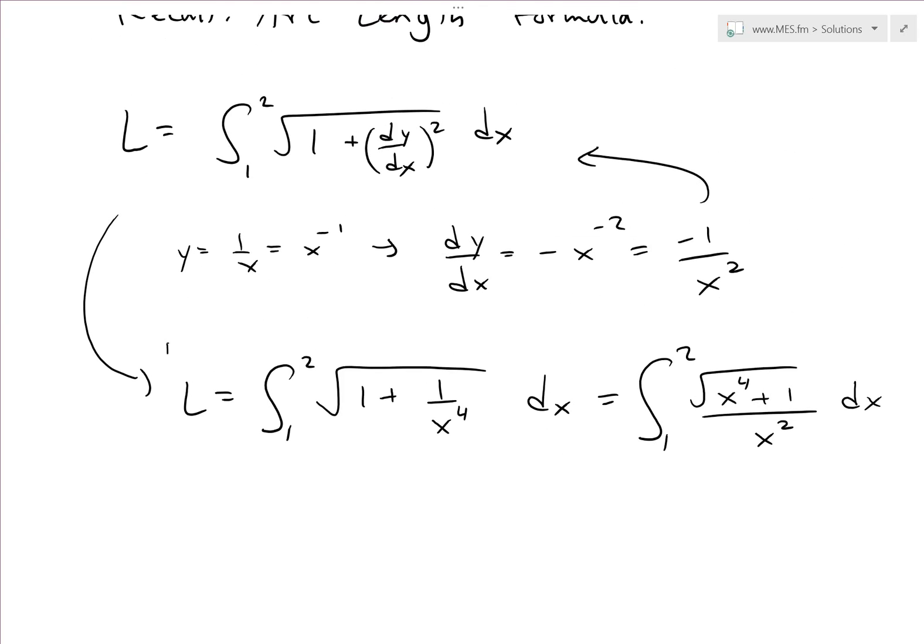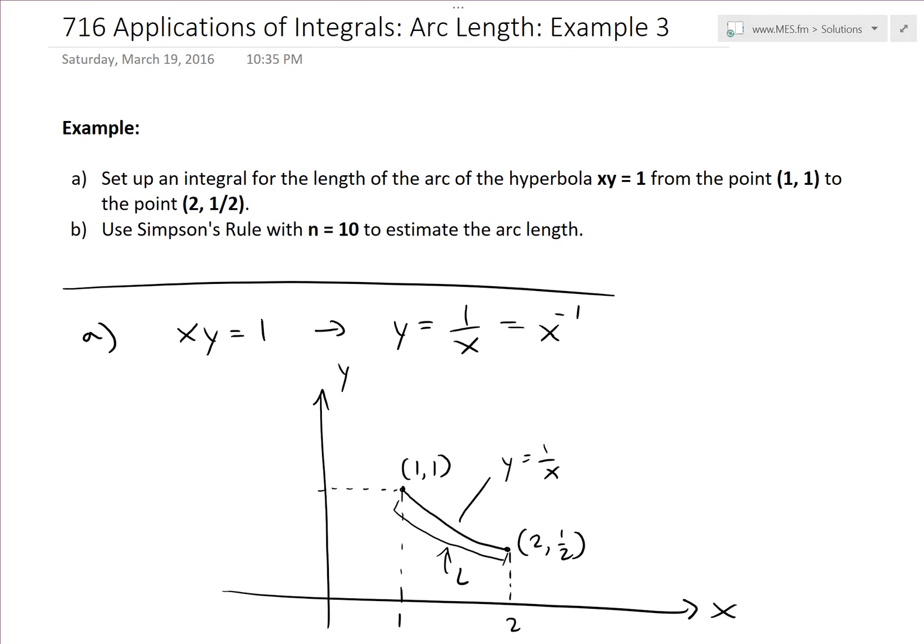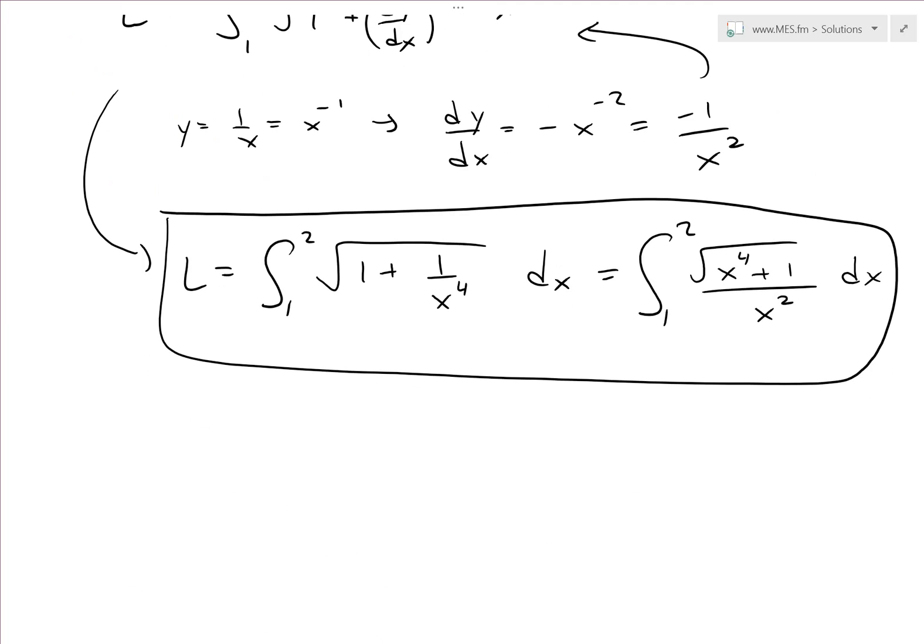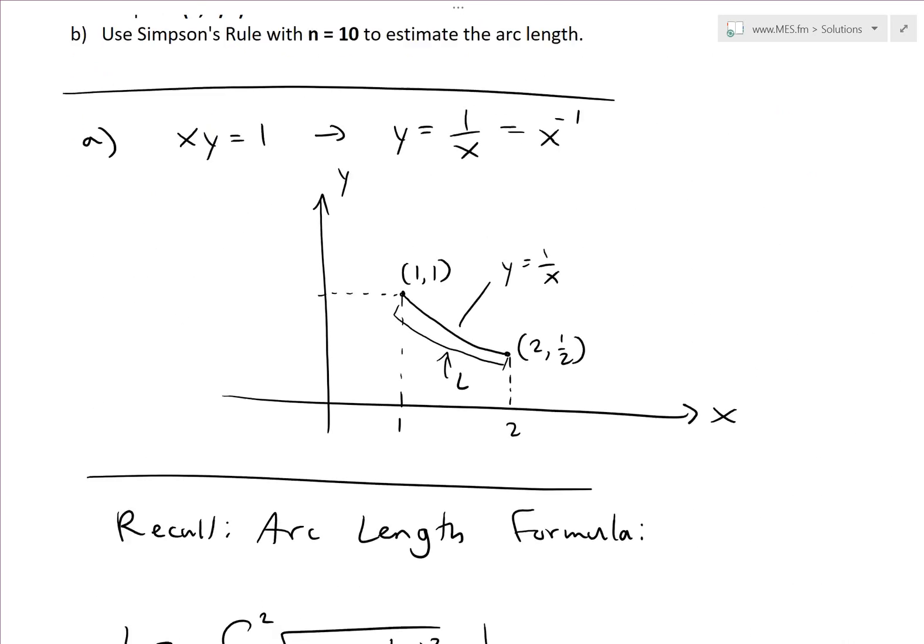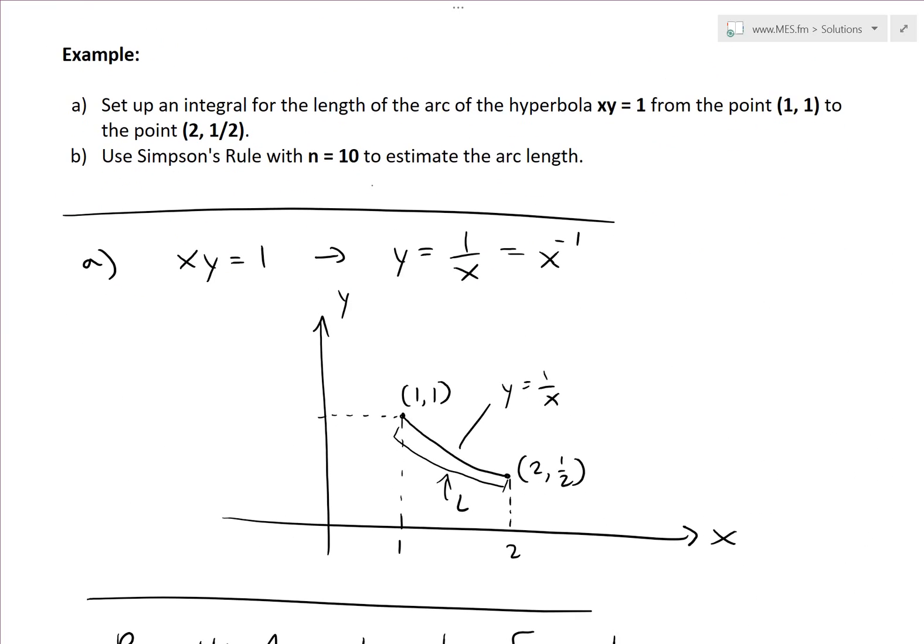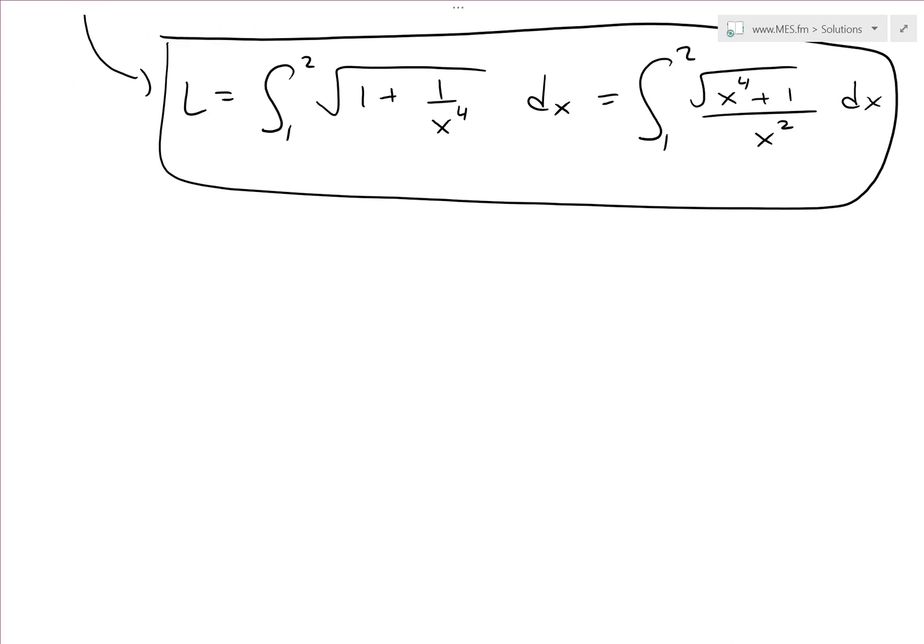And anyways, this is basically part A right here. So part A is just write the integral of the length of the arc. And as you can see, it's pretty complicated. 1 plus 1 divided by x^4, all square root. And this one's pretty complex and difficult to evaluate. So that's why we're going to just use Simpson's rule to estimate the arc length. So let's go to part B.